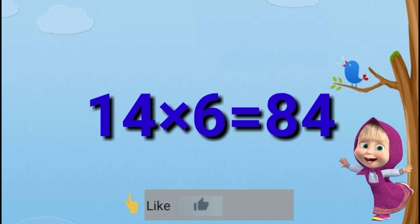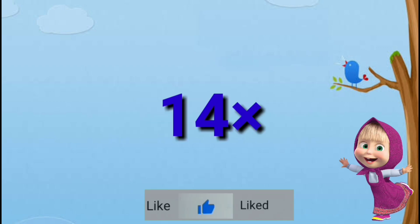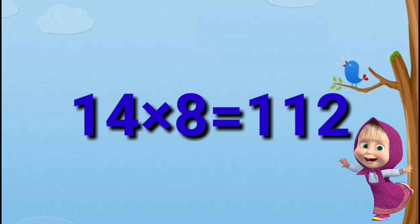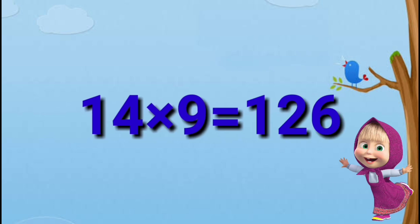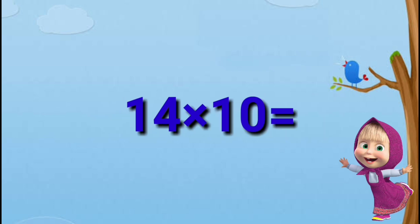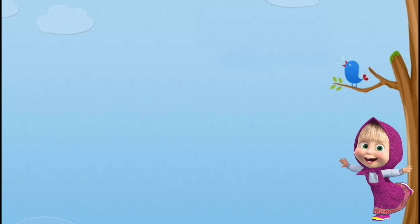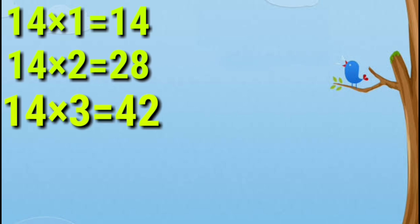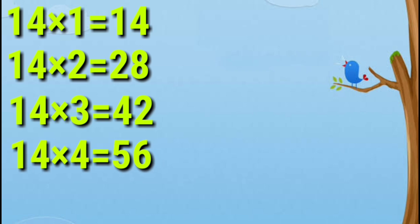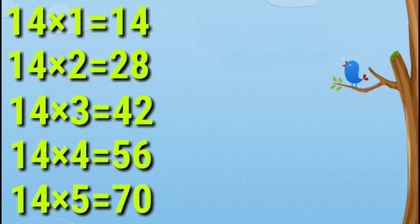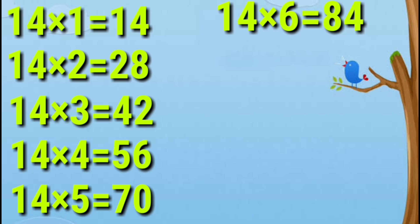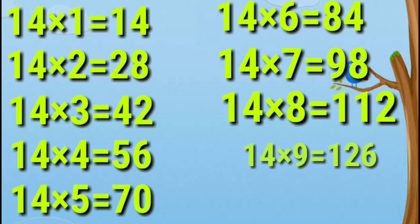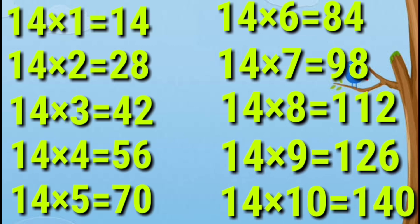14 sixes are 84. 14 sevens are 98. 14 eights are 112. 14 nines are 126. 14 tens are 140. 14 ones are 14. 14 twos are 28. 14 threes are 42. 14 fours are 56. 14 fives are 70. 14 sixes are 84. 14 sevens are 98. 14 eights are 112. 14 nines are 126. 14 tens are 140.